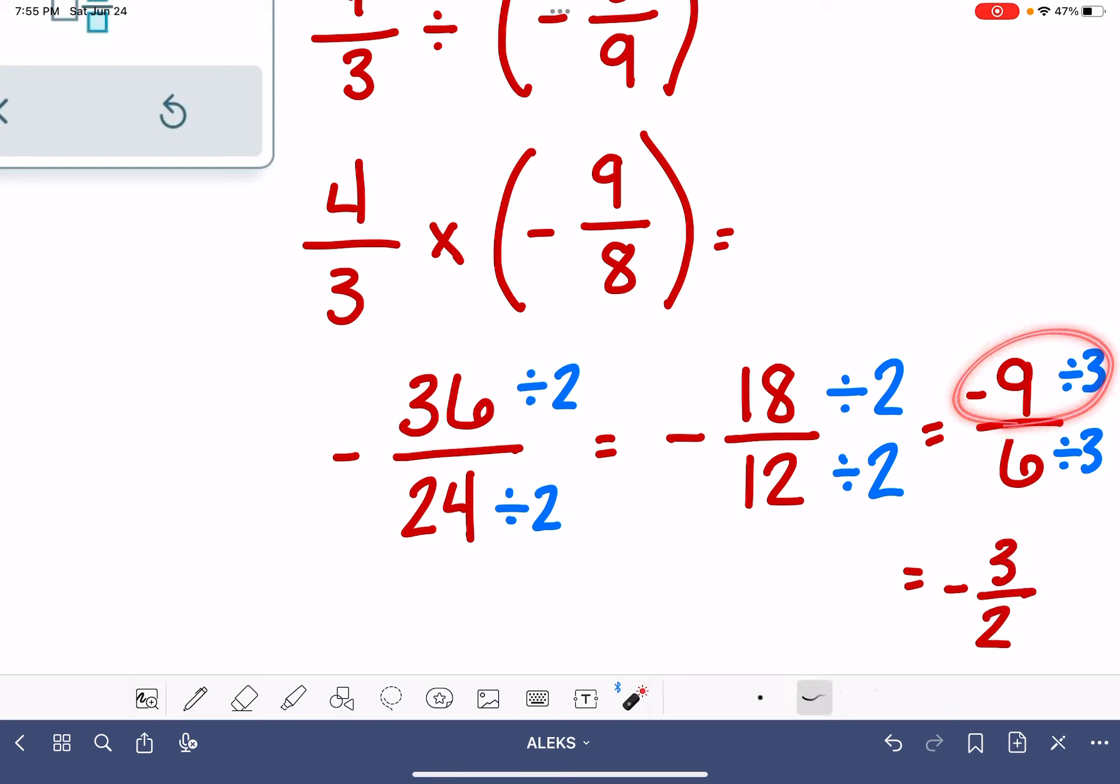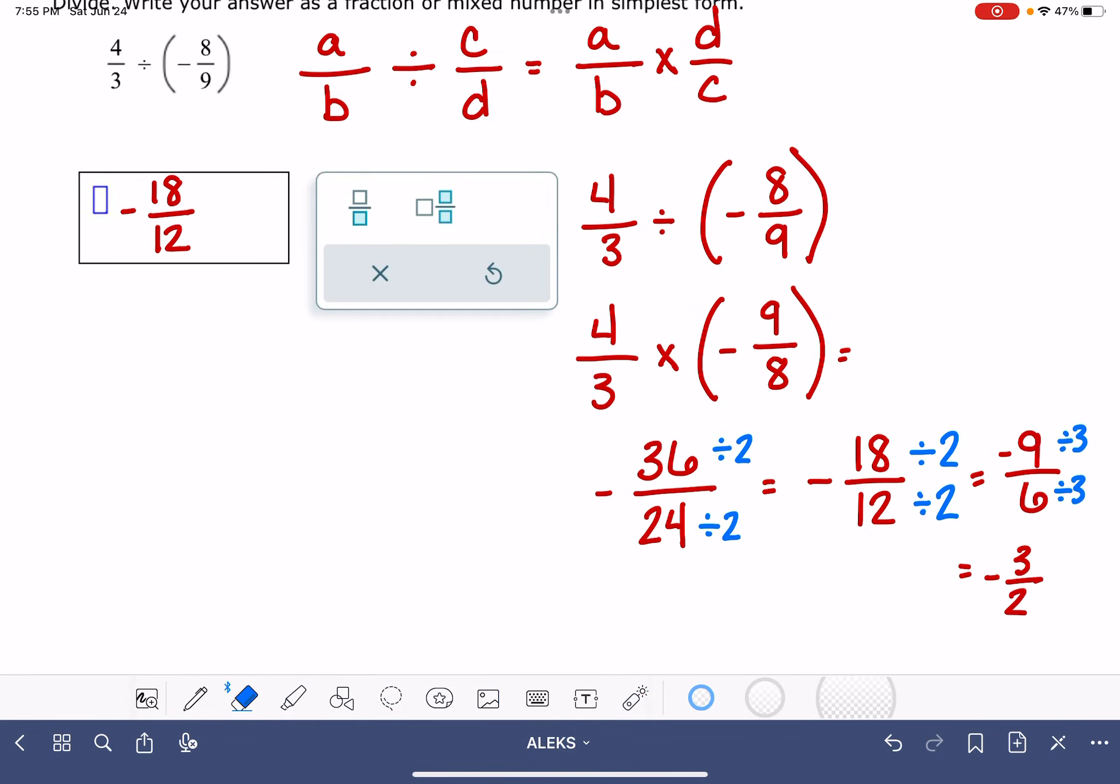9 divided by 3 is 3. 6 divided by 3 is 2. And that is as simple as this problem can get, as simplified as it can get. So that is going to be negative 3/2.